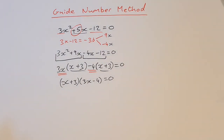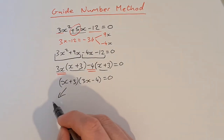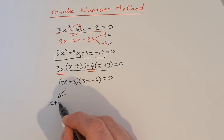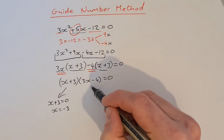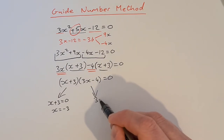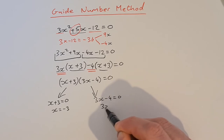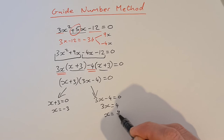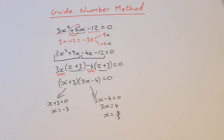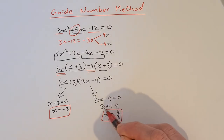We've factorized it now, we just need to solve for x. We take both factors individually: x plus 3 equals zero, so x is equal to minus 3. And then 3x minus 4 equals zero gives 3x equals 4, so x is equal to 4 over 3. Those are our two answers: x equals minus 3 and x equals 4 over 3.